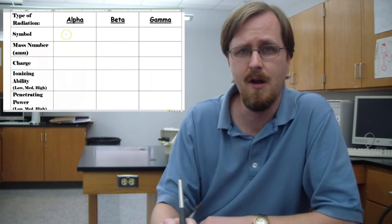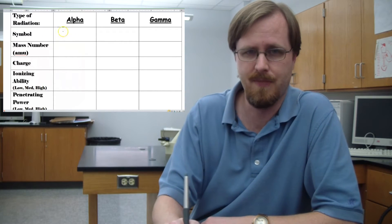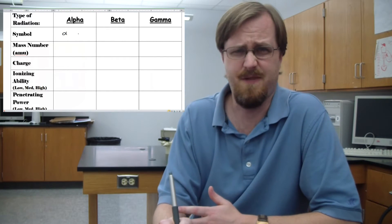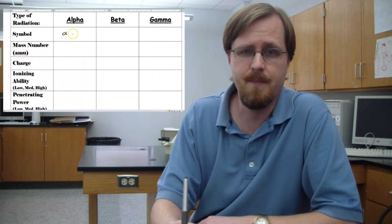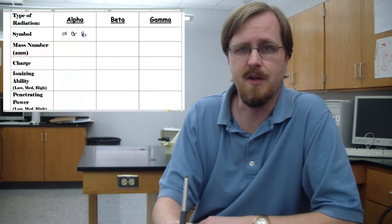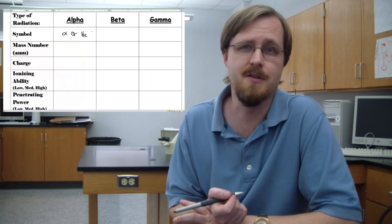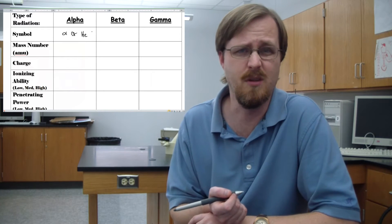So the symbol for the alpha particle. Well, it's the Greek letter alpha, which kind of looks like a fish like this. Or you can just use a He, which is the symbol for helium, because the alpha particle is basically a helium nucleus.